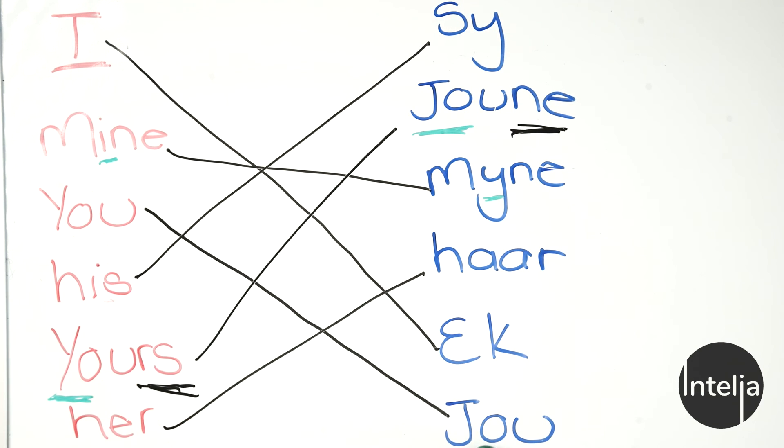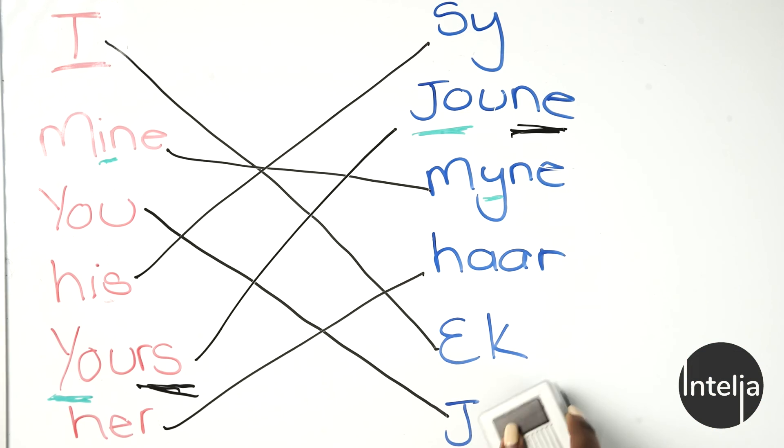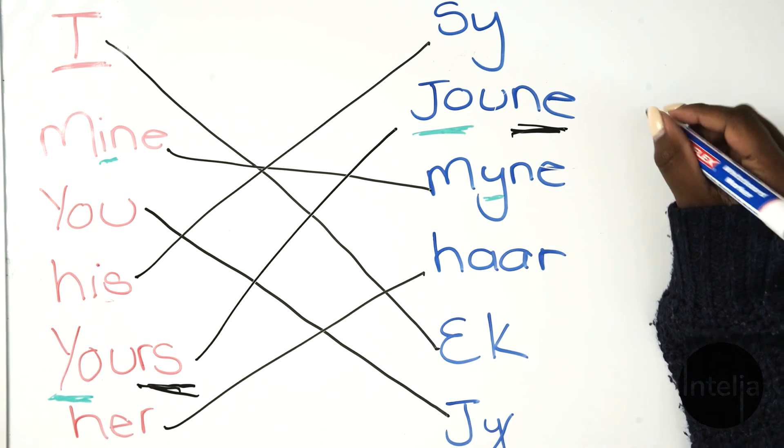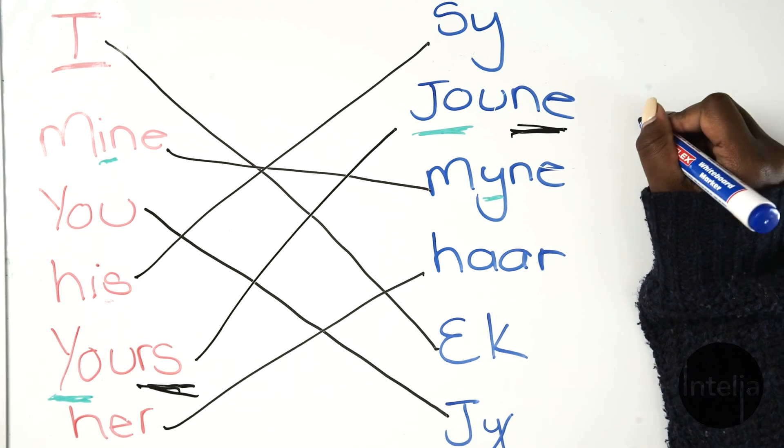Then we have jou and you. This is the one that's wrong because jou means your. So what does you mean? What do you think is you if jou is yours? Joune is yours. And just for fun sake, let's add your here, which is N-E.